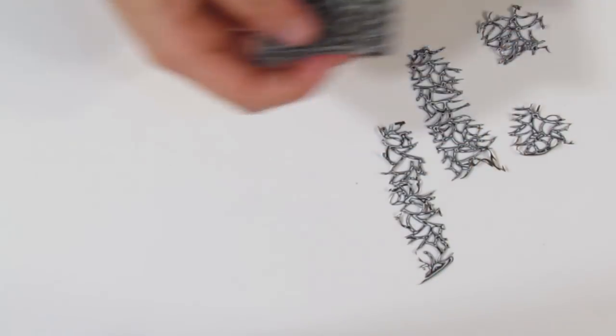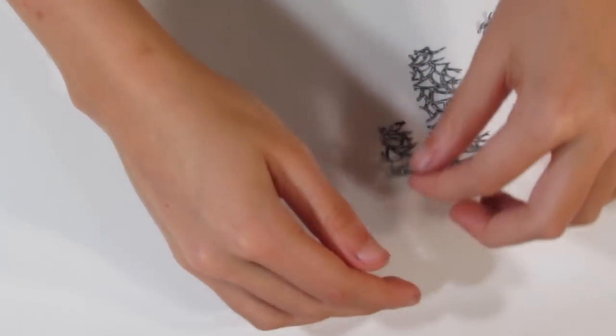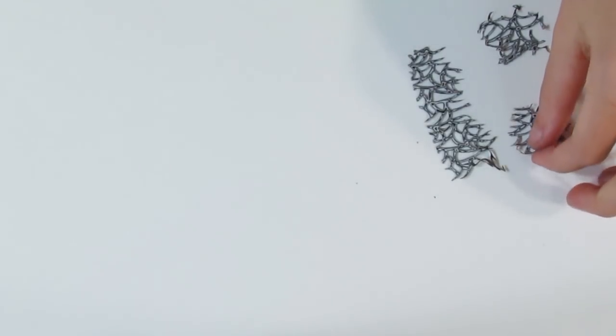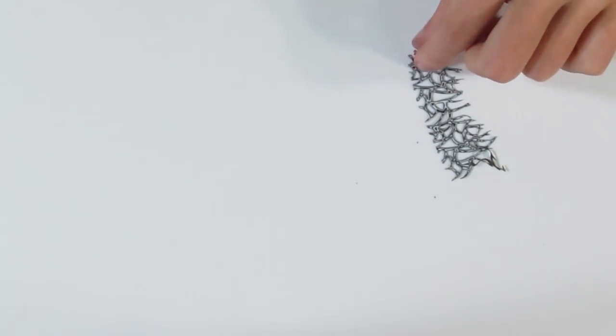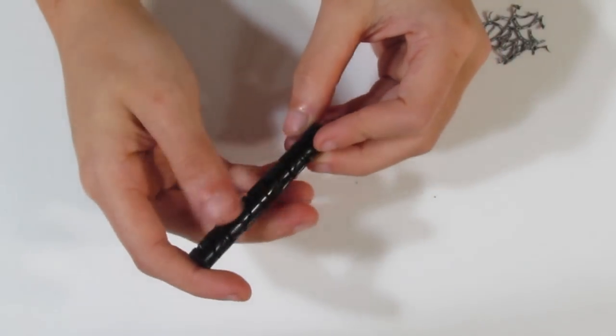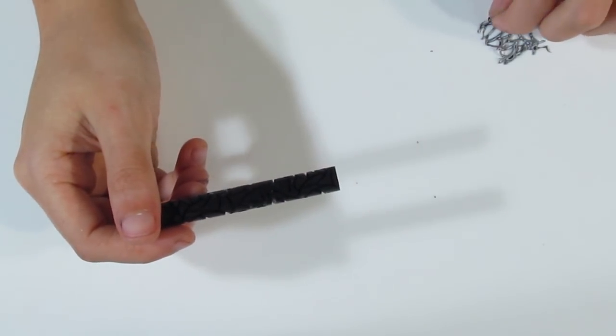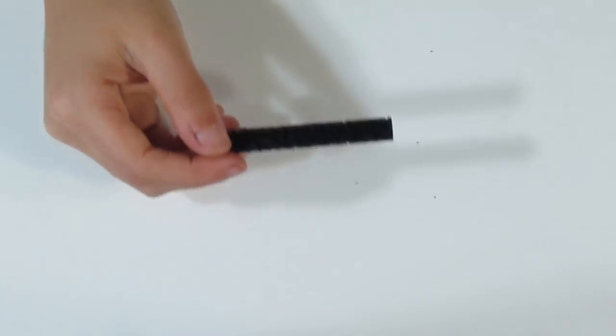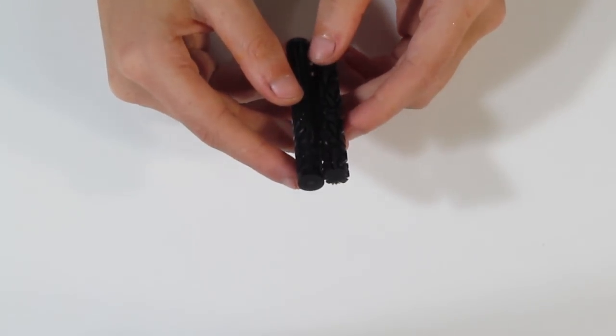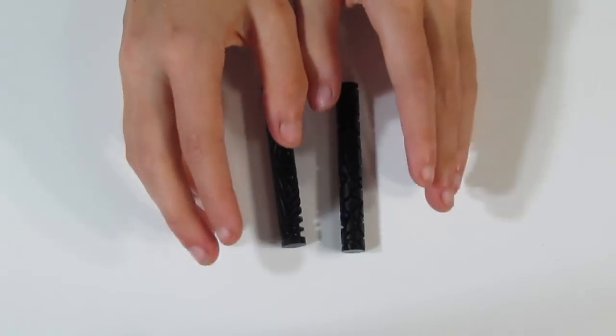So they work really well for Mukume Gane and they work really well for Mica shifts. And so anything where you are taking the clay, imprinting and then slicing, it works really well for. Some of the techniques that they won't work for are techniques like the Sutton Slice that you need a stamp for. Because of the way these are shaped, you can't exactly go popping clay into here and then trying to roll it out. So I don't think that they would work for techniques such as Sutton slices.